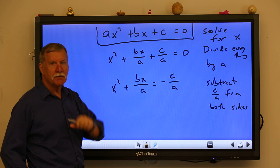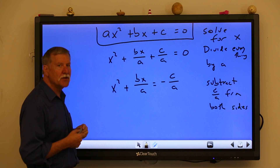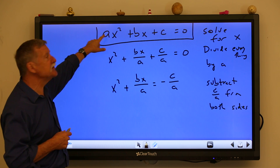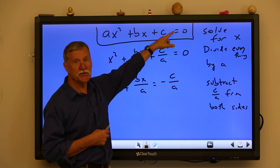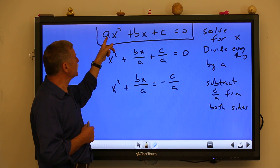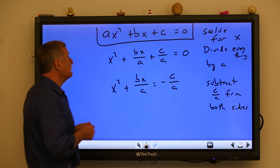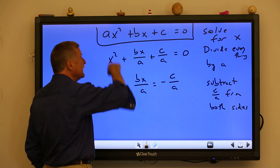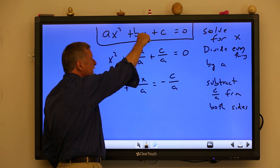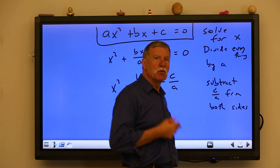We have all the tools to do this — we're just putting them together in a new way. We start with ax² + bx + c = 0. The first thing we do is isolate the x² term. Since x² is being multiplied by a, we divide each term by a. When we do that, ax²/a cancels, leaving just x². Then bx divided by a gives bx/a, c divided by a gives c/a, and zero divided by a is still zero — one of the benefits of always setting it equal to zero.